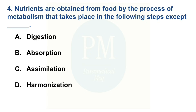Nutrients are obtained from food by the process of metabolism that takes place in the following steps. The correct option is Option D.